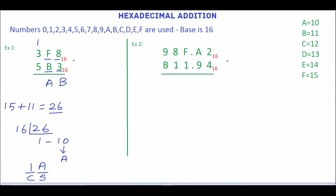Now we will add 1 plus 3 plus 5, which is 9. So 9AB is the result of the above two hexadecimal numbers.